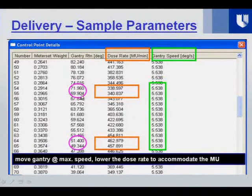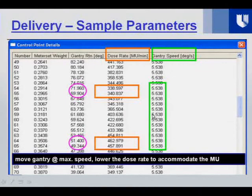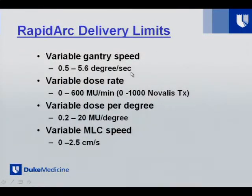One example shows the dose rate changing while the gantry speed is fixed; in another unit configuration, the gantry speed changes. For Novalis TX, the dose rate range is 0 to 1,000 MU/min; TrueBeam has even more. The variable dose per degree ranges from 0.2 to 20 MU per degree, and MLC speed ranges from 0 to 2.5 cm per second. We need to look at QA requirements for higher MUs and sensitivities with these varying parameters.